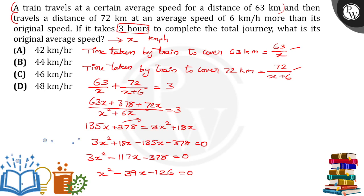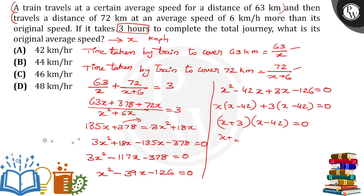Now we do factorization: x² - 42x + 3x - 126 = 0. Since -42 times 3 equals -126, taking x as common from the first two terms: x(x - 42) + 3(x - 42) = 0. So (x + 3)(x - 42) = 0, giving x = -3 or x = 42.